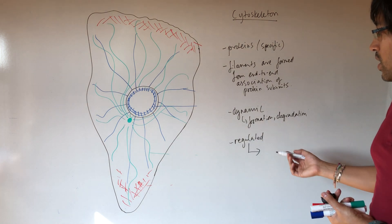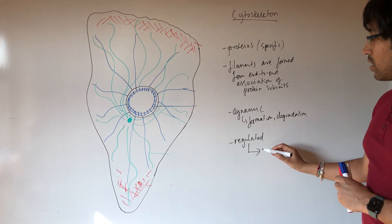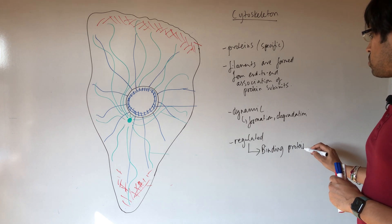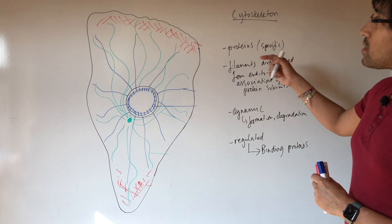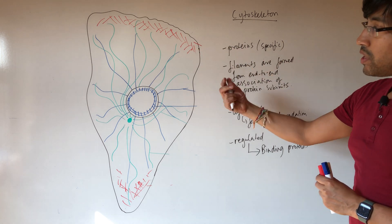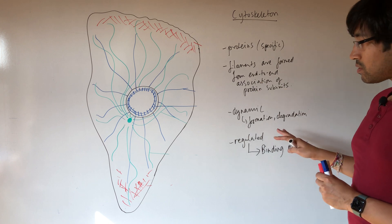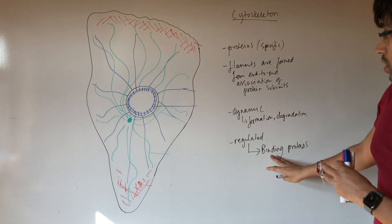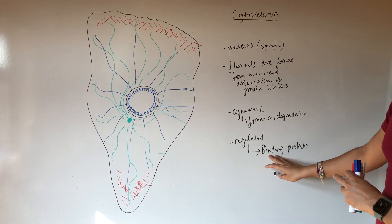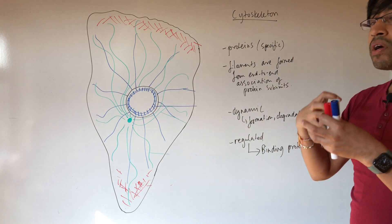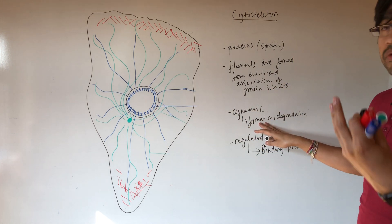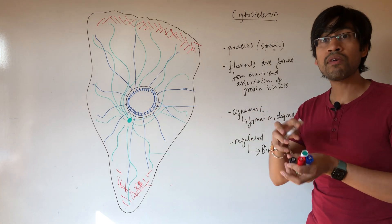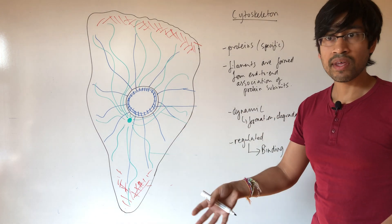So regulated is very important. And one of the main ways that the cytoskeleton is regulated is by having binding proteins. So we've discussed that all these cytoskeletal networks individually are made up of specific proteins, but those proteins don't work in isolation. A wide variety of other proteins bind to these networks, modifying their behavior, sometimes causing their formation, sometimes enhancing their degradation, sometimes rearranging them to form different structures that do different things.